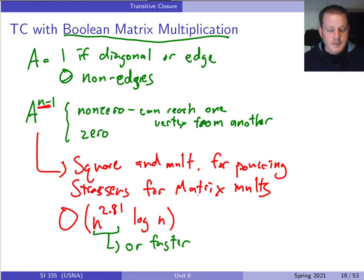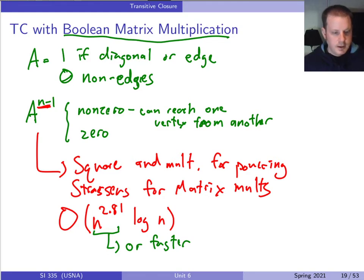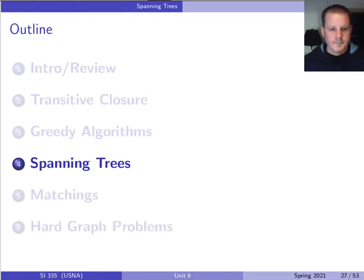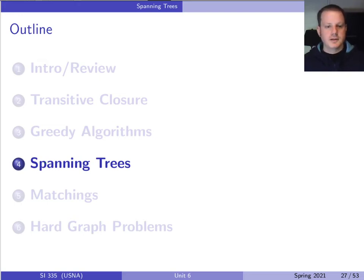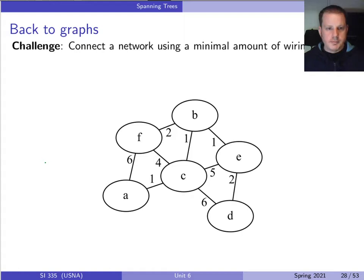That's all on transitive closure. Now let's skip ahead and talk about spanning trees — a different problem. The spanning tree algorithm we're going to see is an example of a greedy algorithm. I wanted to show you the example first and then go back to the general idea.